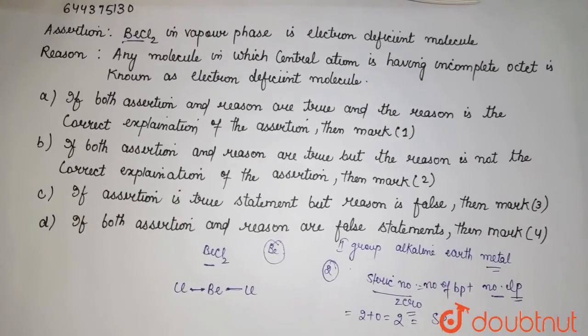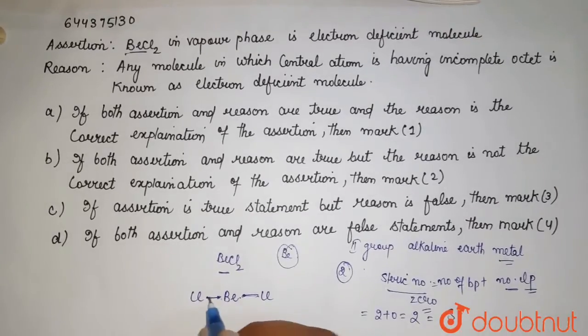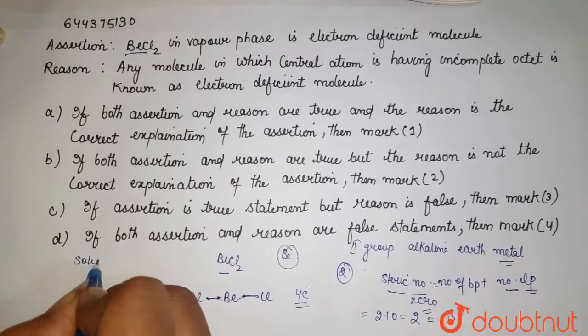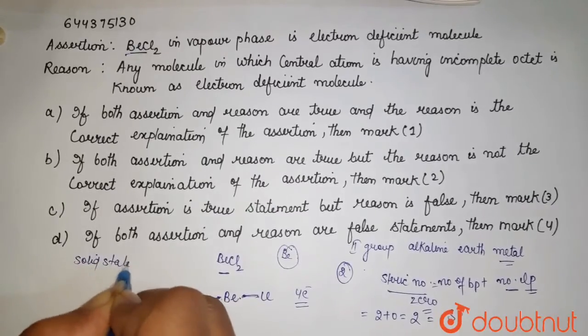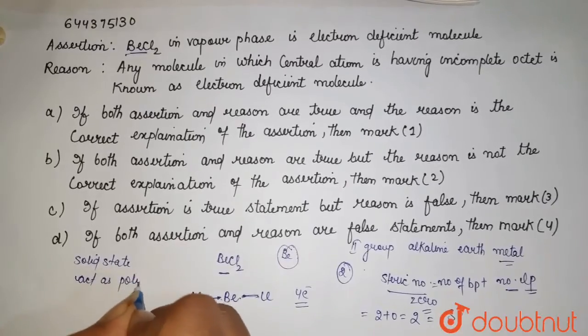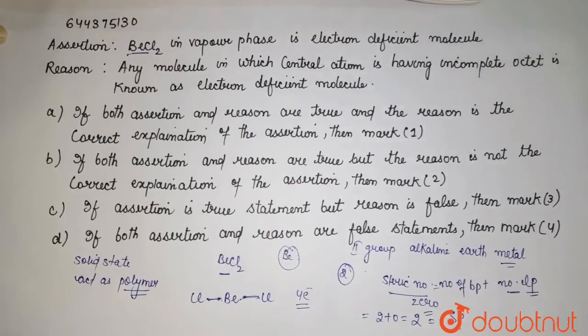So it is sp hybridized. If I talk about here, one, two, three, four, it is a four electron species. In solid state, it acts as polymer. It forms the polymer chain and exists in a polymer like this.